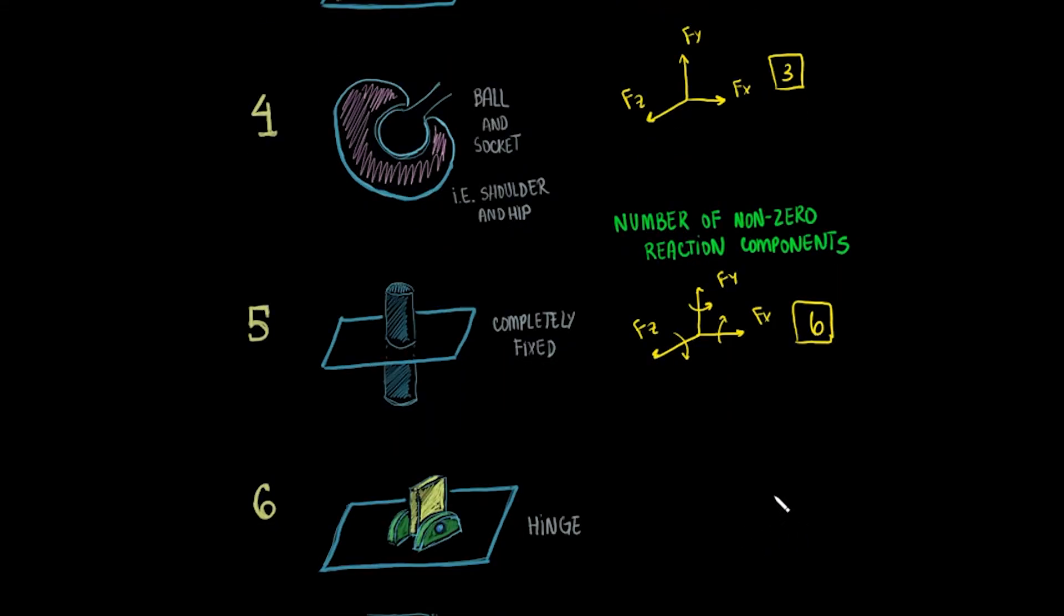Let's look at hinges now. This first one is fixed on the plane. This means it will have all three non-zero reaction force components. Now, in terms of moments, the hinge can rotate about the x-axis. Thus, we only have two non-zero reaction moment components, leading to a total of five non-zero reaction components.